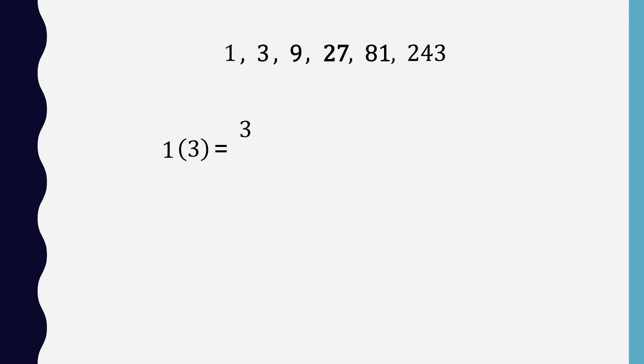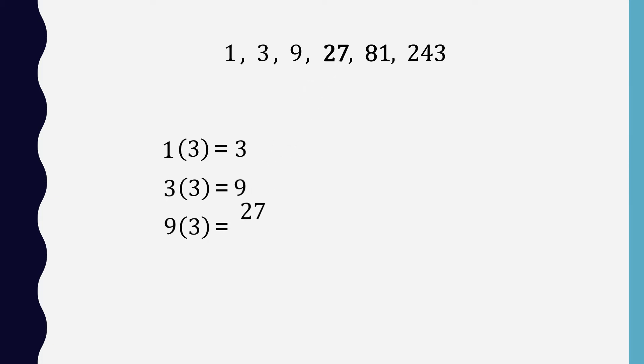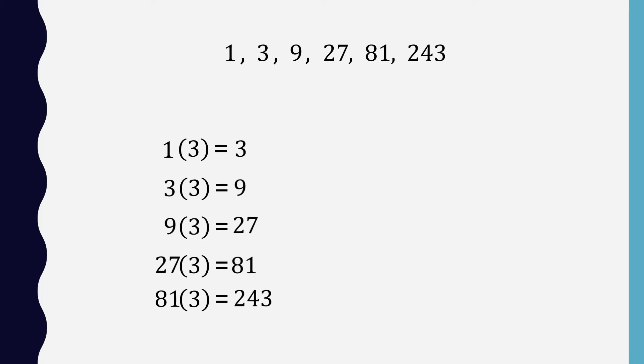Here is one sequence that is geometric: 1, 3, 9, 27, 81, and 243. What makes it geometric? The same number is being multiplied from one term to get the next one. The first term, 1, is multiplied by 3 to get 3; then 3 is multiplied by 3 to get 9; then 9 is multiplied by 3 to get 27, and so on. If the same constant is being multiplied to each term to get the next term, that is a geometric sequence.